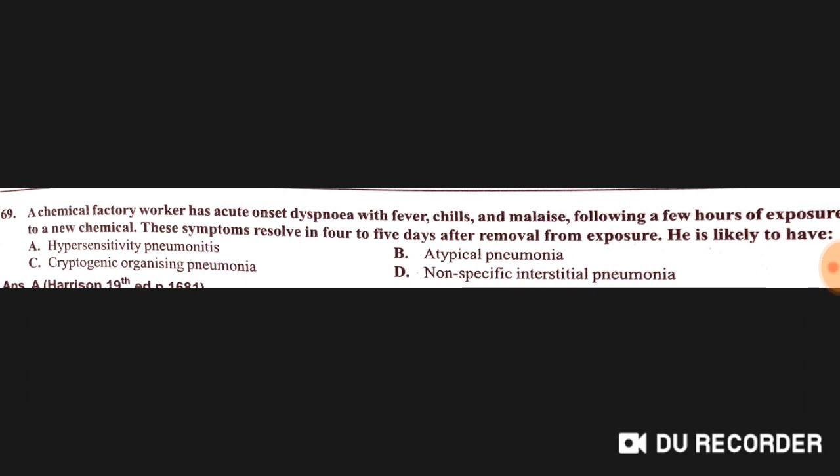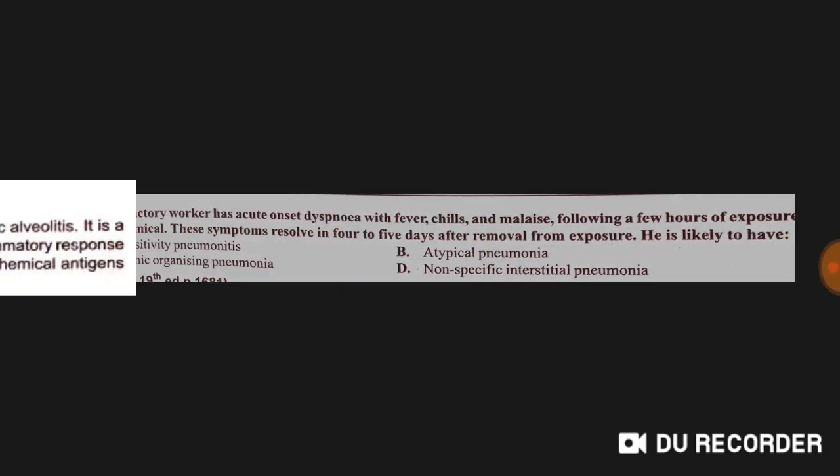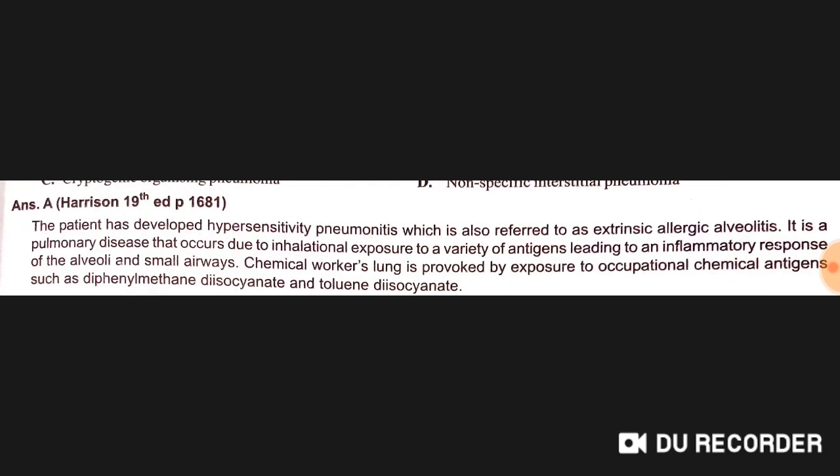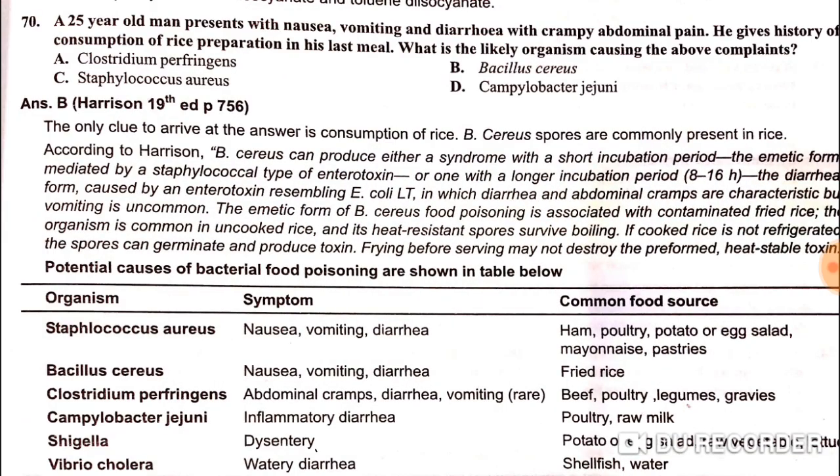A chemical factory worker has acute onset of dyspnea, fever, chills, and malaise following a few hours of exposure to a new chemical. These symptoms resolve in four to five days after removal from exposure. He is likely to have hypersensitivity pneumonitis — option A is correct.